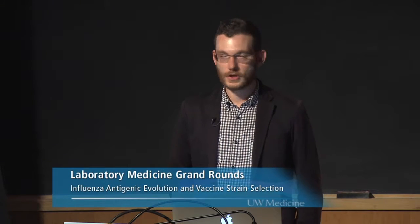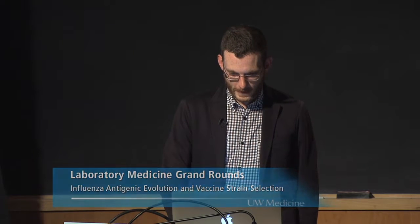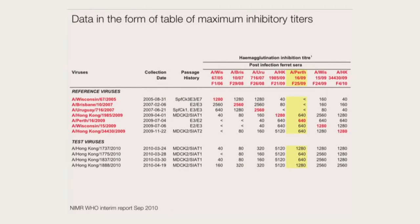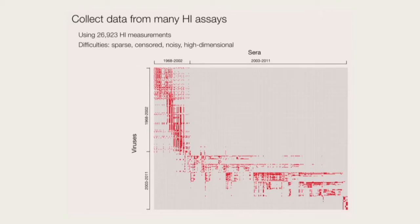This basic approach has been used since the 1970s and it's been the basis for how the WHO chooses vaccine strains. However, they now have a problem in that they're generating lots and lots of data — it's hard to look at 100 tables and make sense of them at a meeting. In the dataset I'm looking at, I have 27,000 HI measurements over the course of 1968 to 2011. I could not look at that by eye, so the idea is to use statistics to try to leverage this and understand what's going on better.